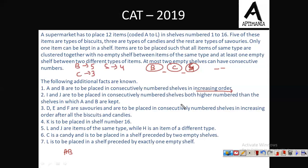Further, I and J are to be placed in consecutively numbered shelves, both at higher numbers than the shelves in which A and B are kept. I and J are the same type, but they need not necessarily be in increasing order — so it can be J, I. We have to keep them together, and the shell numbers of J and I must be greater than those of A and B. This is our second condition.